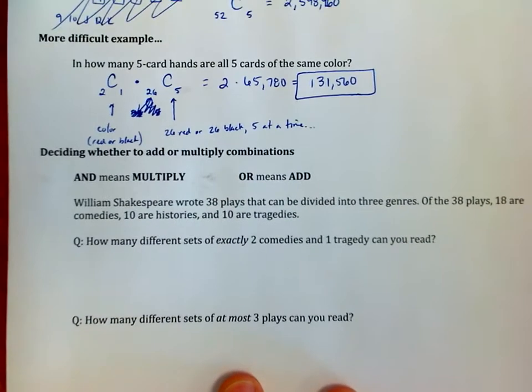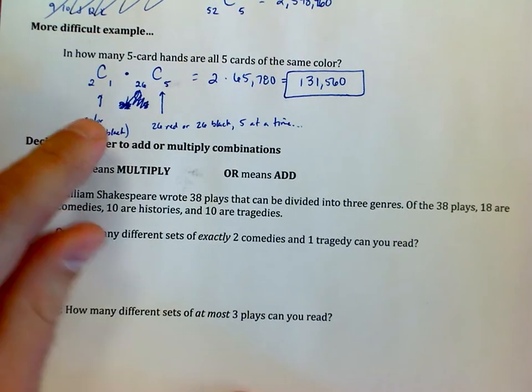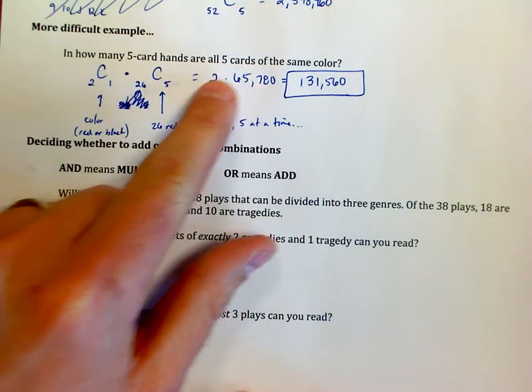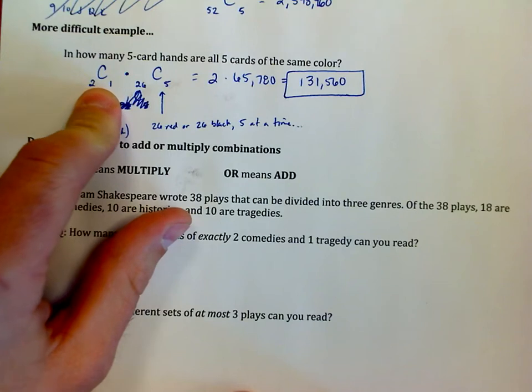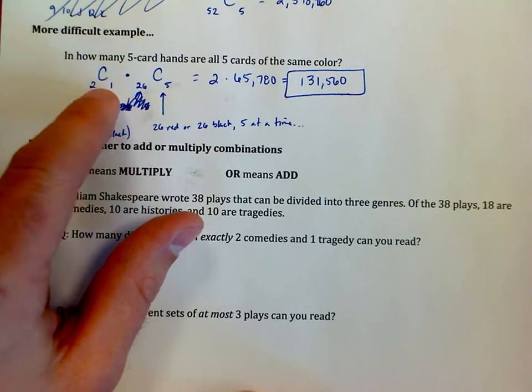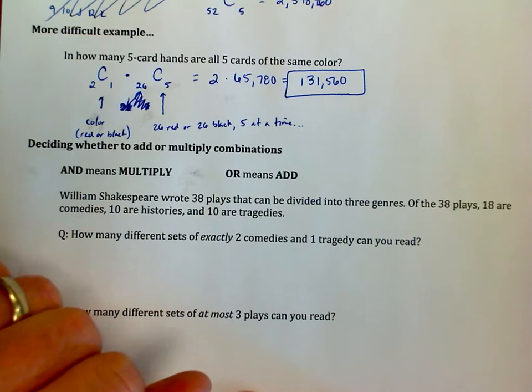So in other words, in the previous problem, the reason I multiplied is because in order to meet this requirement of having five card hands that are all five cards of the same color, I had to have red or black, I had to have one color, and I needed to choose five of those out of the 26 remaining cards. So I had to meet both of these requirements at the same time. That's why I multiplied.